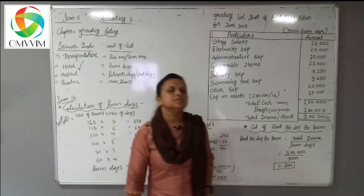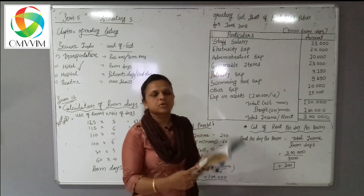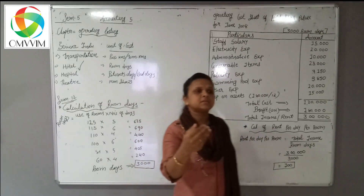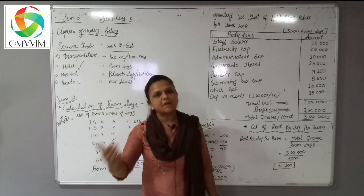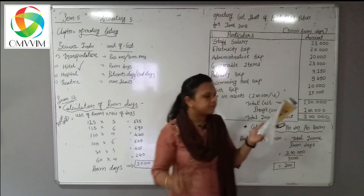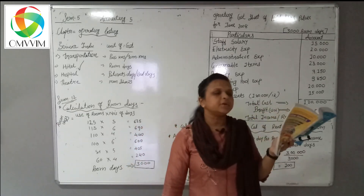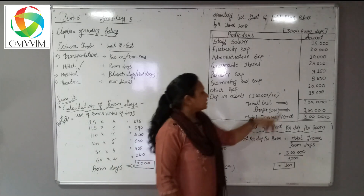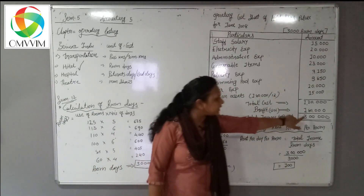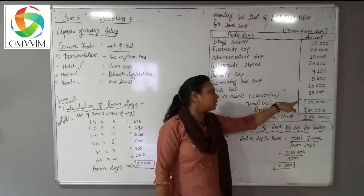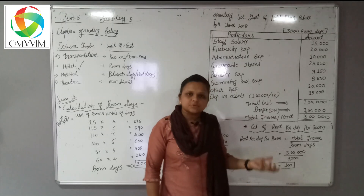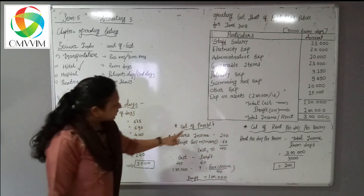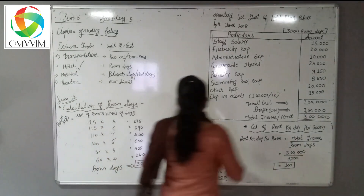After totaling all the expenses, we receive the total cost, which is 1,20,000. Now for the profit, a specific instruction is given in the book. The room rent is fixed — room rent means cost plus profit — in such a manner that a profit of 60% of room rent income is earned. They have to earn profit of 60% on income. But we have only the total cost, so after assuming and putting it into the equation, we find out the profit.